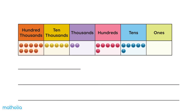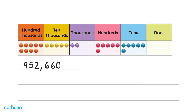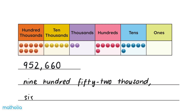Let's find the number represented in the place value chart. There are nine hundred thousands, five ten thousands, two thousands, six hundreds, six tens, and no ones. The number represented in the place value chart is 952,660.